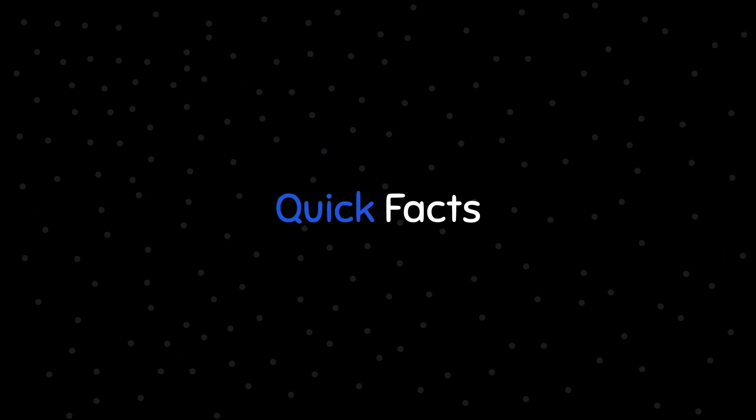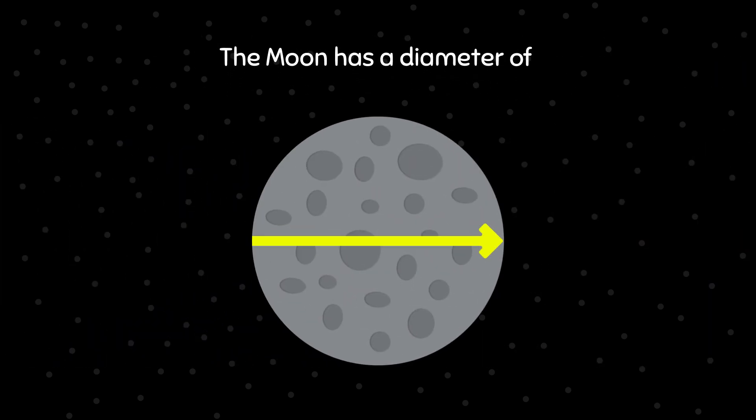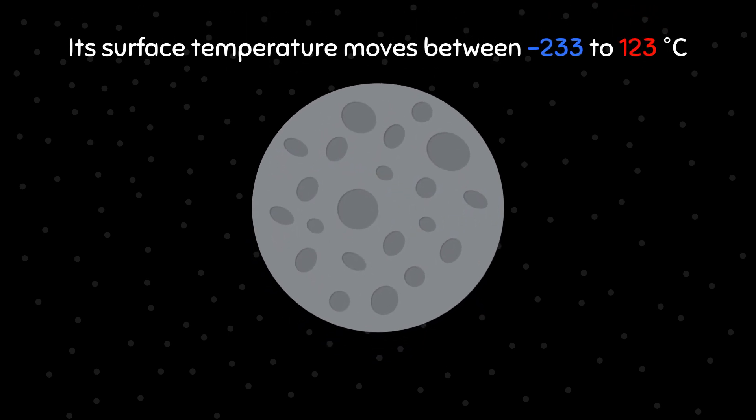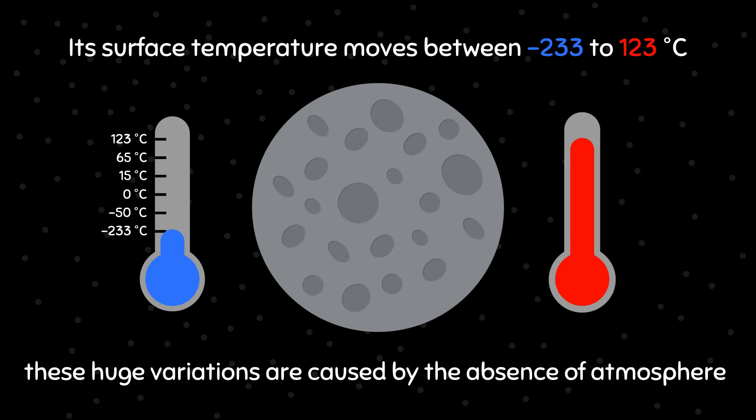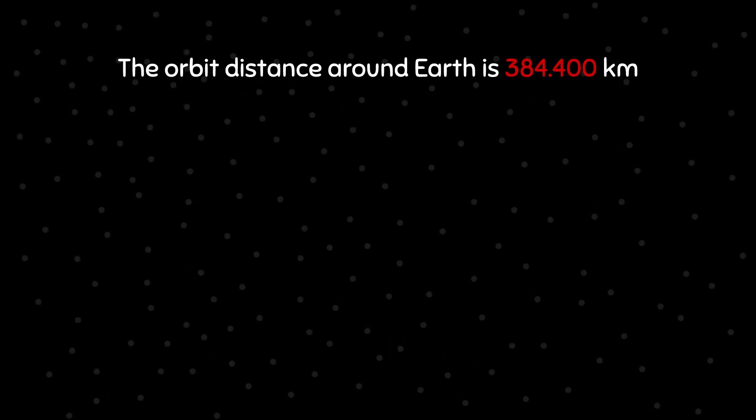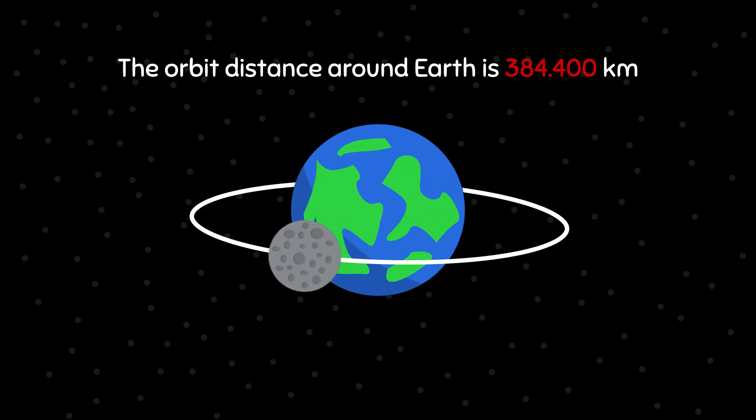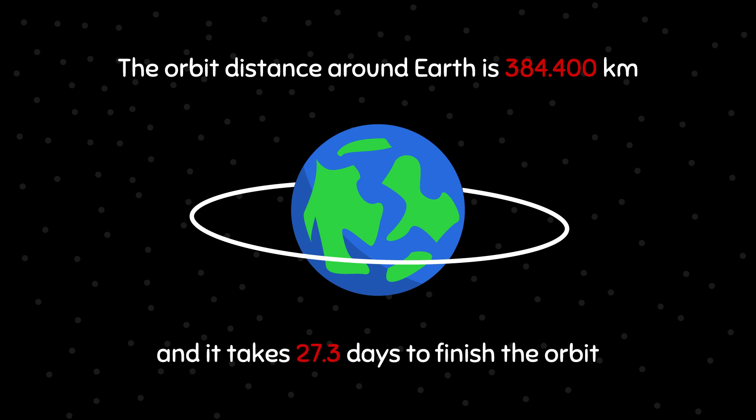Now some quick facts about the Moon. The Moon has a diameter of 3,475 km, and its surface temperature moves between -233 to 123 degrees Celsius. The orbit distance around Earth is slightly above 384,000 km, and it takes 27.3 days to finish the orbit.